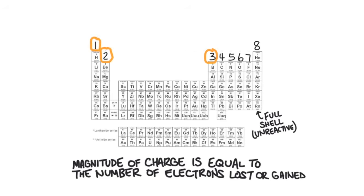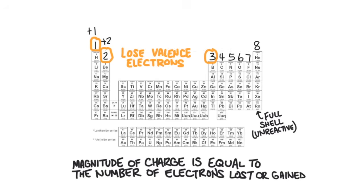Groups one, two, and three will lose all of their valence electrons — these are metals. In general, metals will lose valence electrons. Since they are losing electrons, and electrons are negatively charged, they will end up having a positive charge. The magnitude of the charge is equal to the number of electrons lost. So group one will have a +1 charge, group two will have a +2 charge, and group three will have a +3 charge.